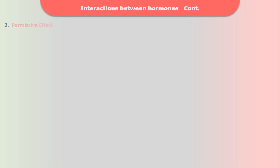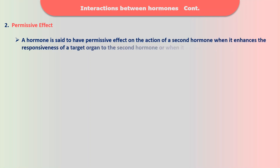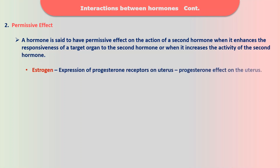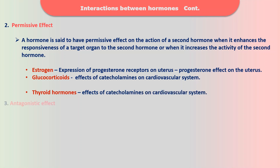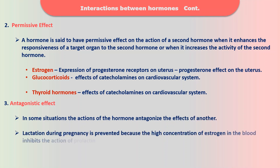The effect of a hormone is said to be a permissive effect when it enhances the responsiveness of a target organ to a second hormone. For example, overexpression of progesterone receptors on the uterus by estrogen is an example of permissive effect. The third effect is the antagonistic effect: in some situations, the action of one hormone antagonizes the effect of another. For instance, lactation during pregnancy is prevented because high concentrations of estrogen inhibit the action of prolactin, hence suppressing milk secretion.